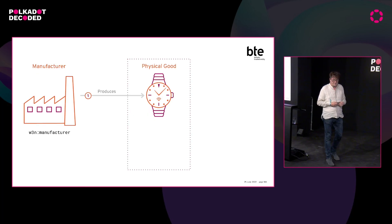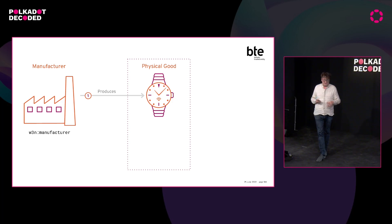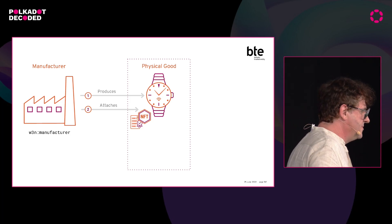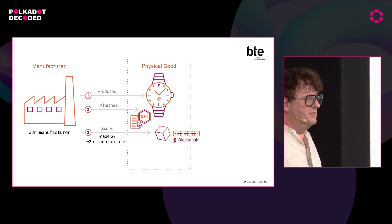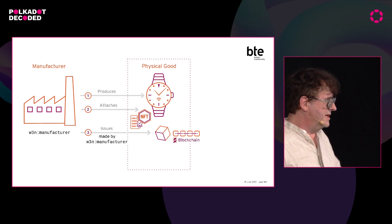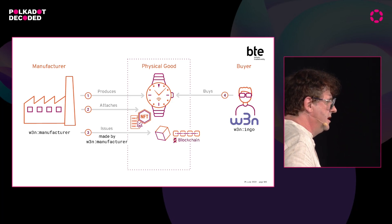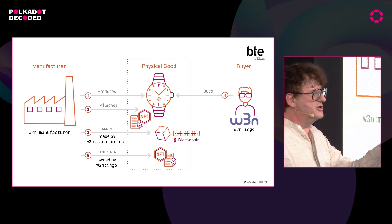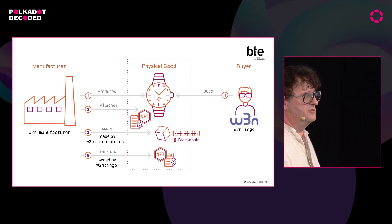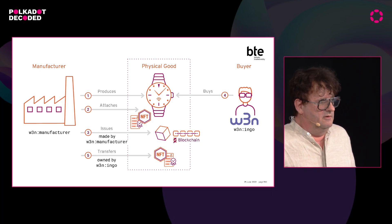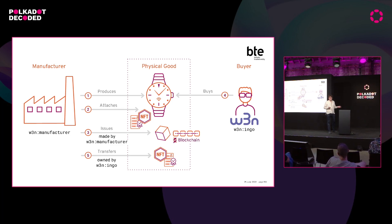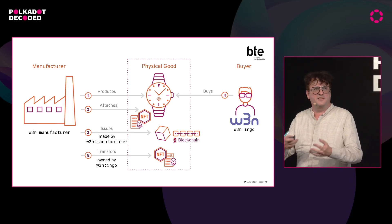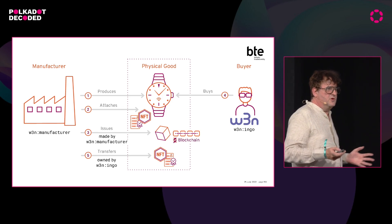Let's make an even better use case. Here we have a watch manufacturer who produces a watch and then attaches an NFT to the watch — maybe a QR code on the back or something. Then issues a credential on the blockchain saying this thing was actually produced by this manufacturer. Now if I go and buy this watch, the watch manufacturer would transfer the ownership on the smart contract of this NFT to me. So now I own a watch and an NFT. If someone steals my watch and tries to sell it on a secondary market, they will have a hard time because they don't have the NFT — so they don't officially own it. I have an owner certificate stored on the blockchain, which makes it more powerful.